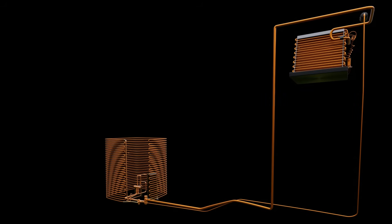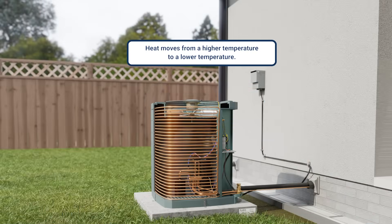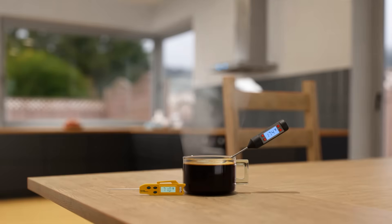Let's start with two fundamental principles. First, heat moves from a higher temperature to a lower temperature. This is why a hot cup of coffee cools down in a cold room.